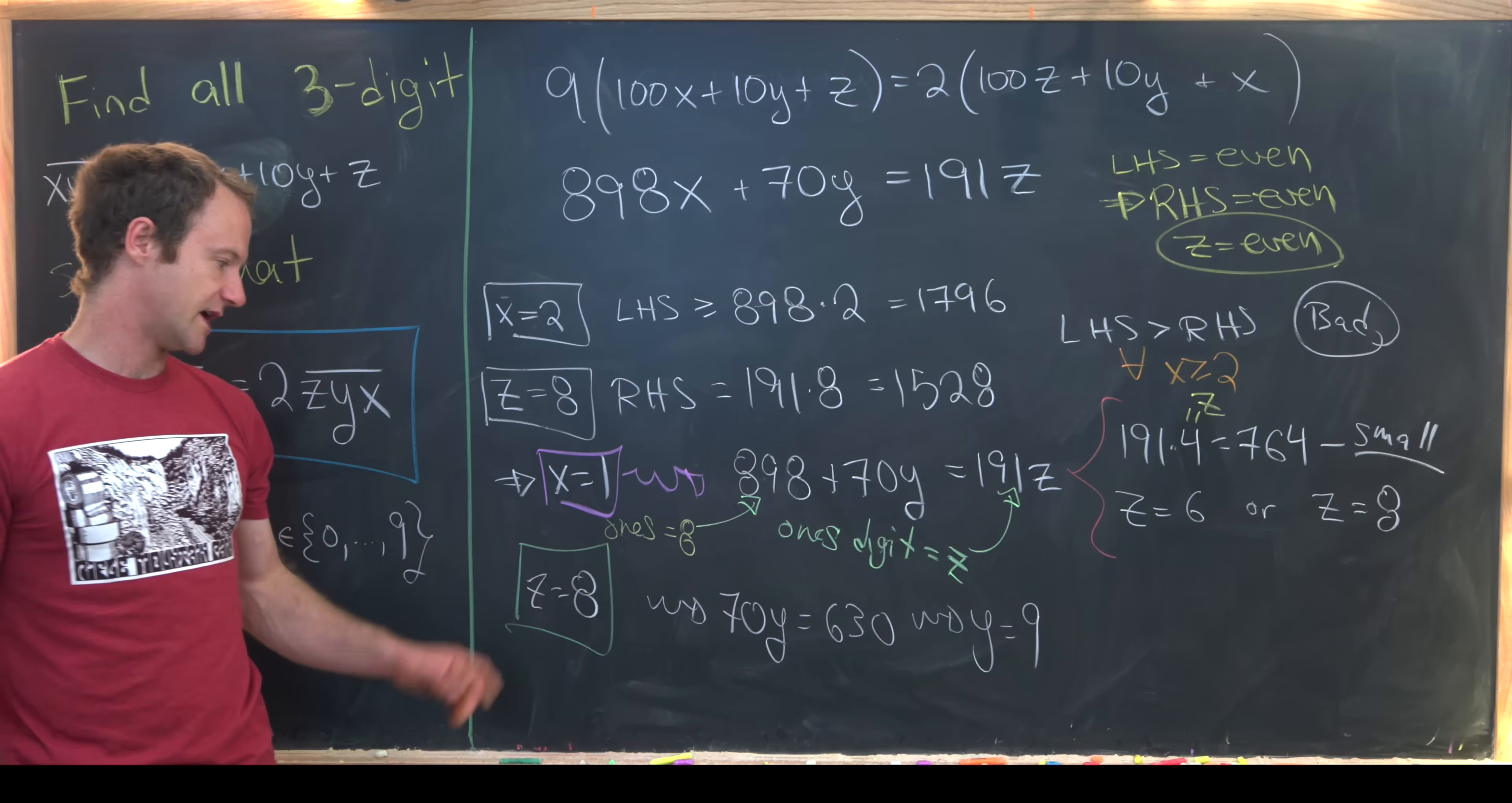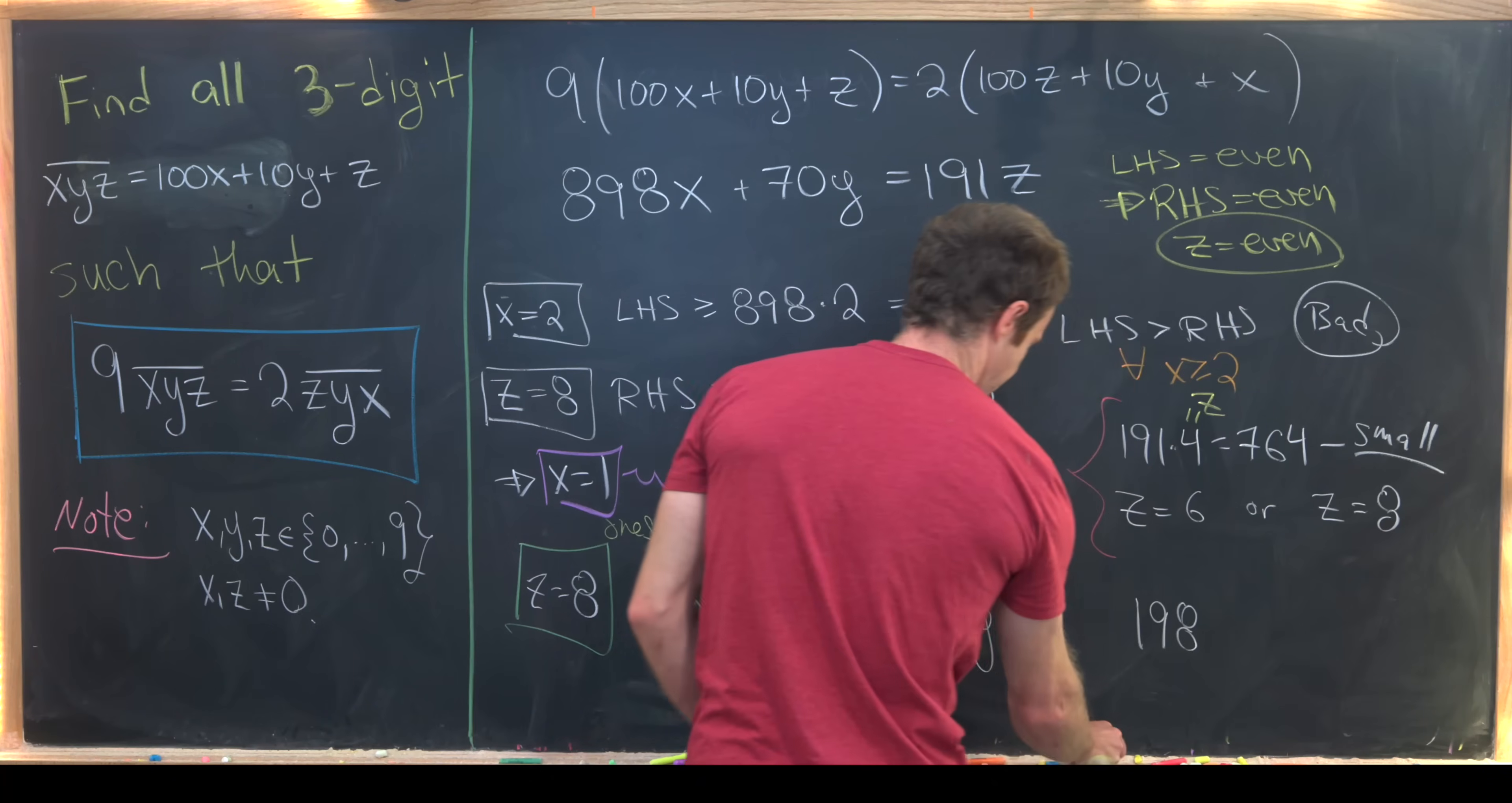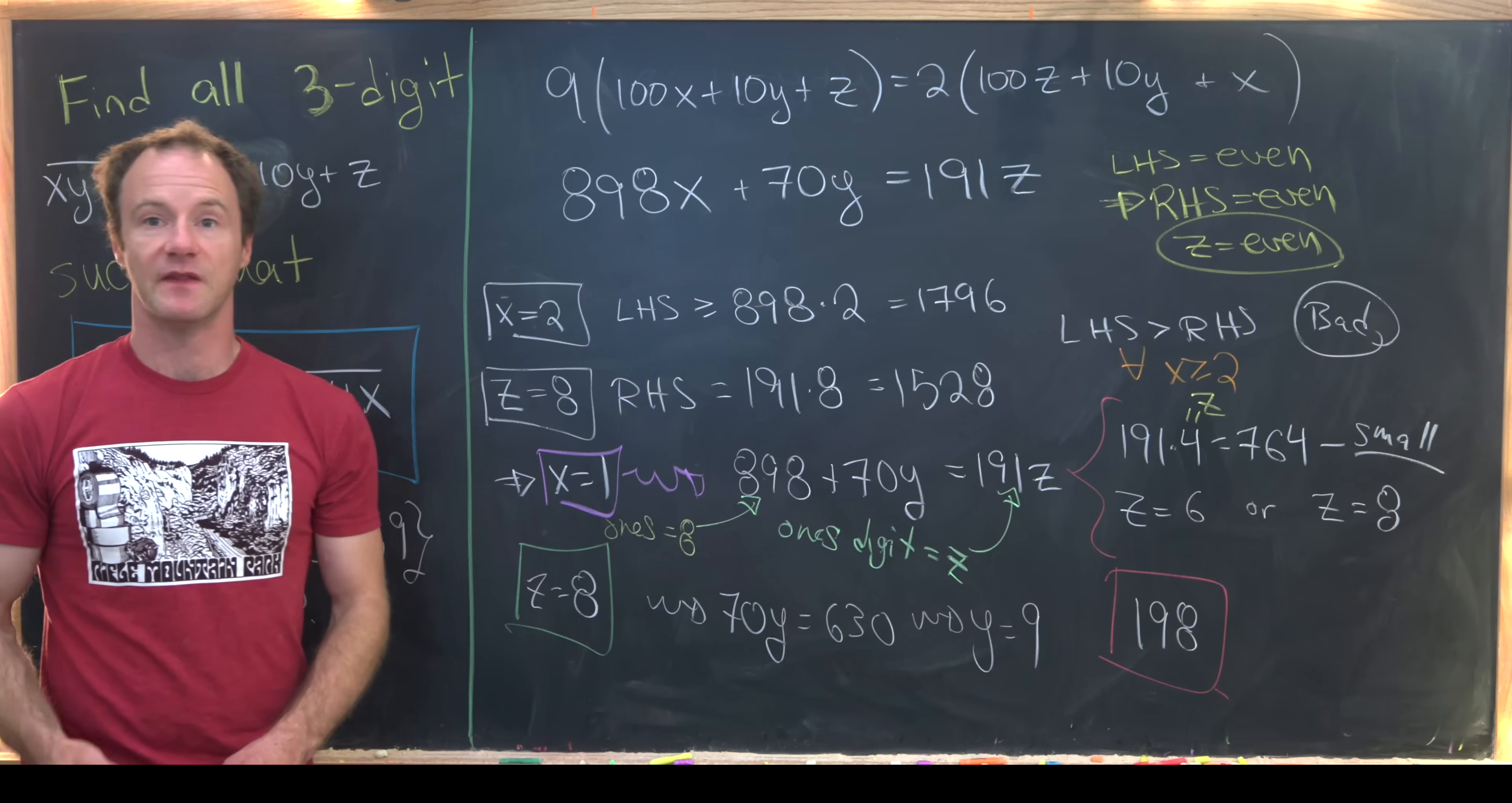So we've got x is 1, y is 9, and z is 8. So our final answer is the 3-digit number 198. And that's a good place to stop.